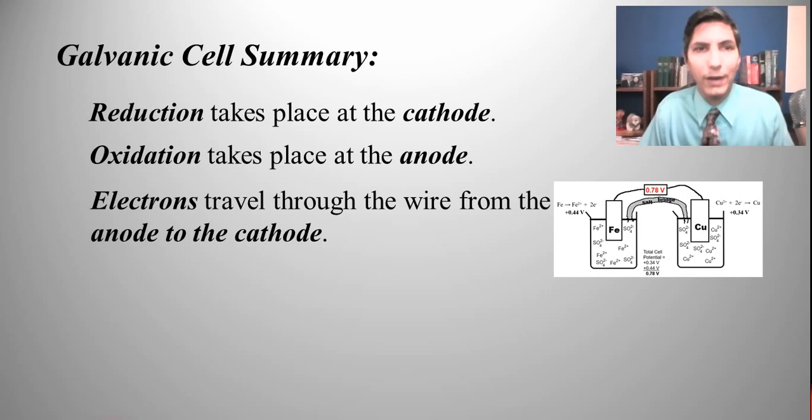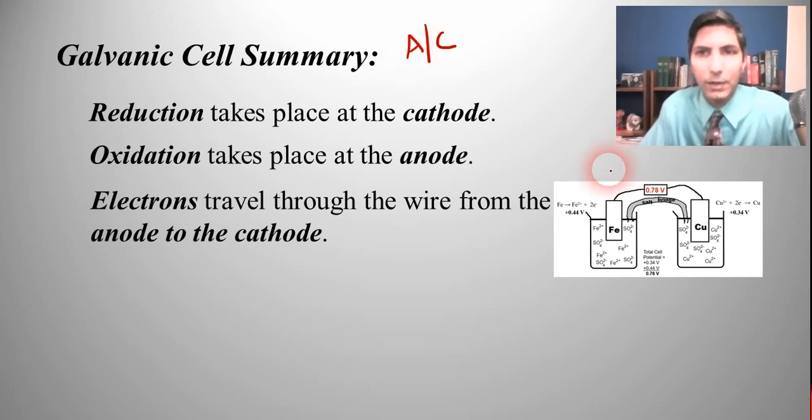Electrons travel through the wire from the anode to the cathode. If you have trouble remembering that, think of AC, like the air conditioning. So if this side on the left was the anode, then the electrons are traveling in this direction toward the cathode. They always go from anode to cathode. So that's a way to remember that.